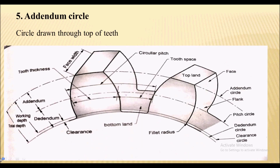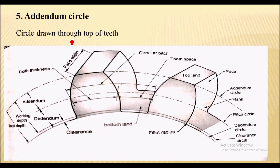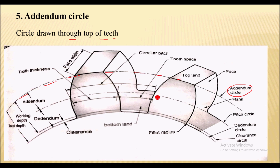Next is the addendum circle. The addendum circle is the circle drawn through the top of the teeth. As you can see in the figure, this circle is concentric with the pitch circle — that is the addendum circle.